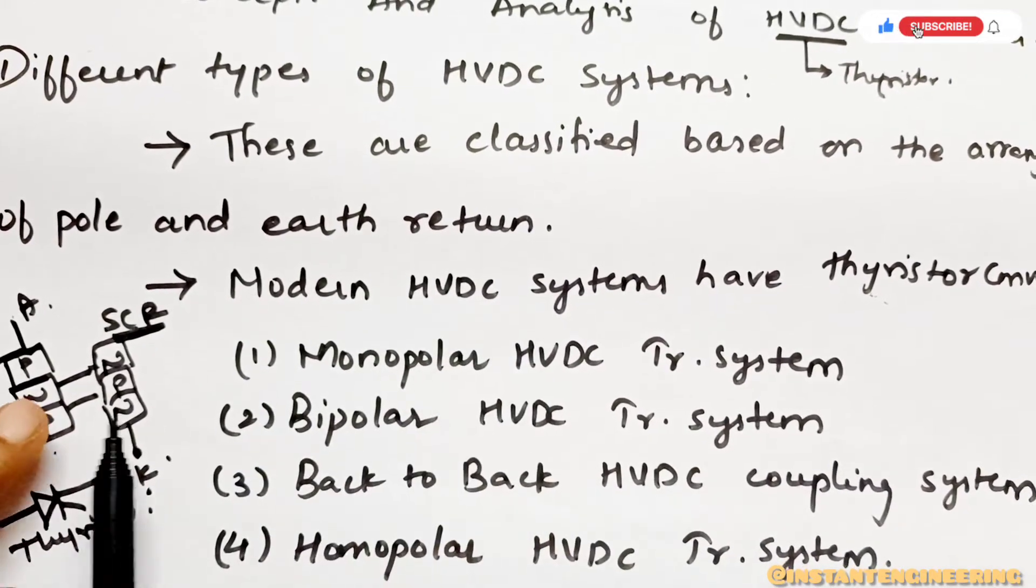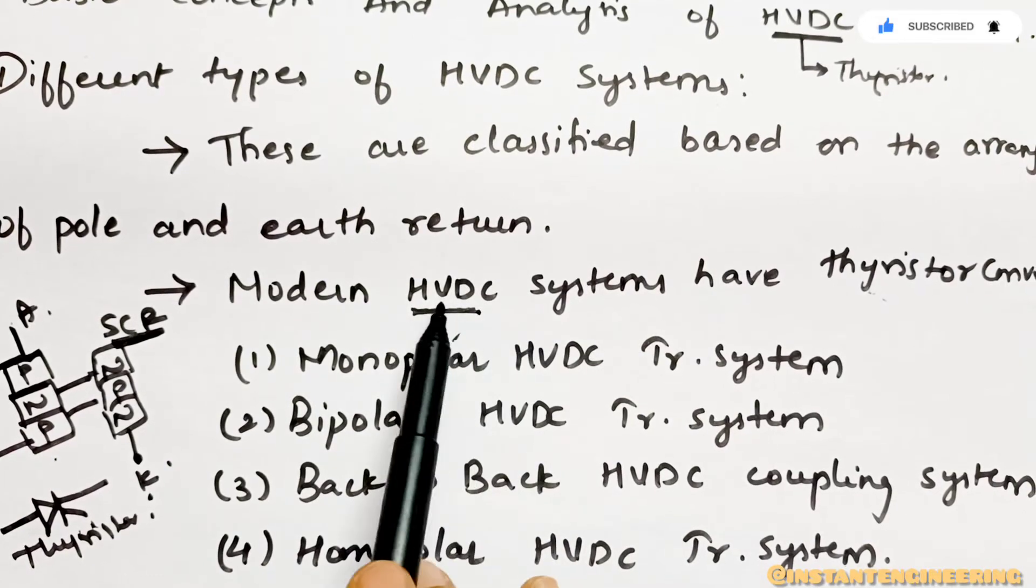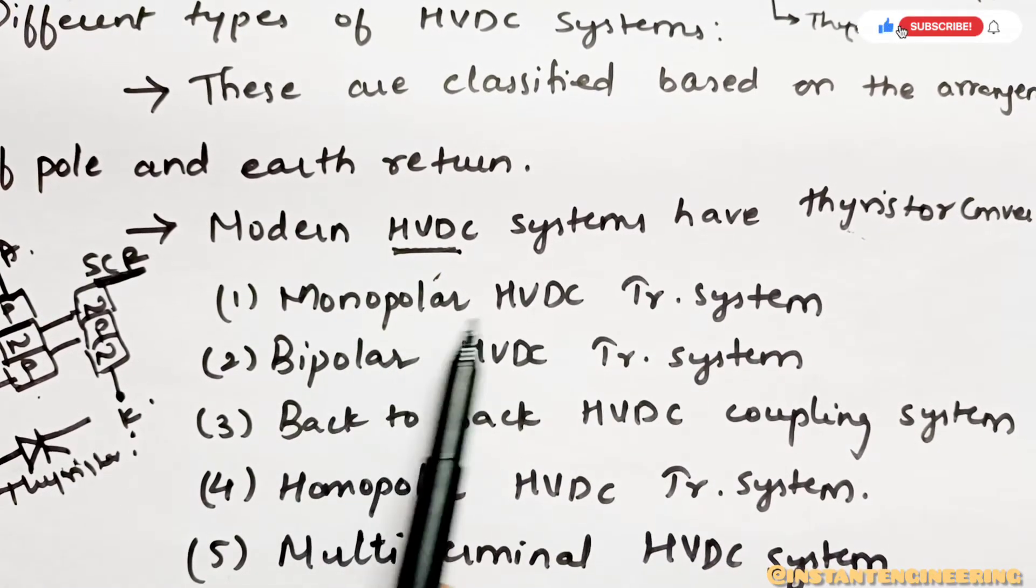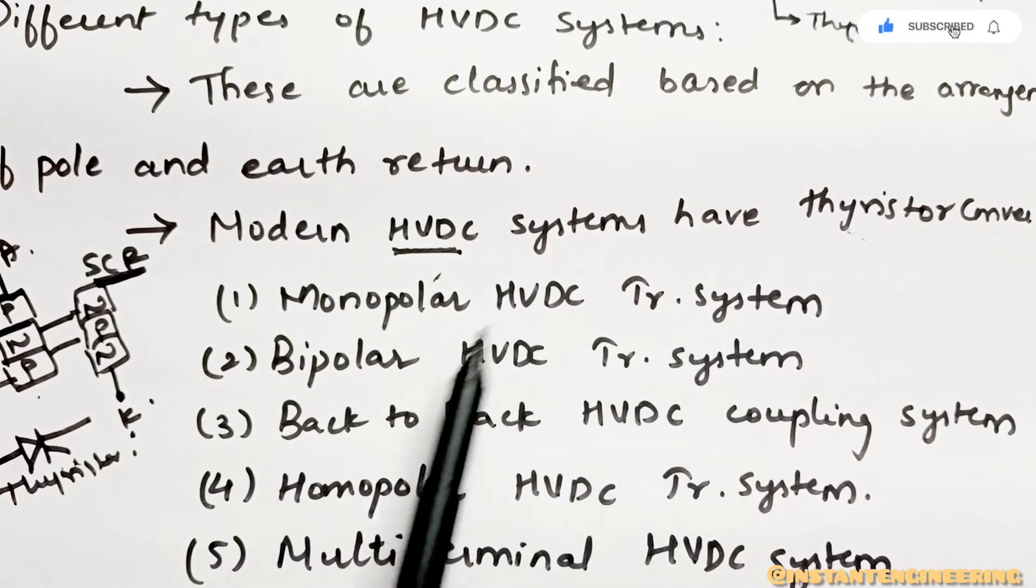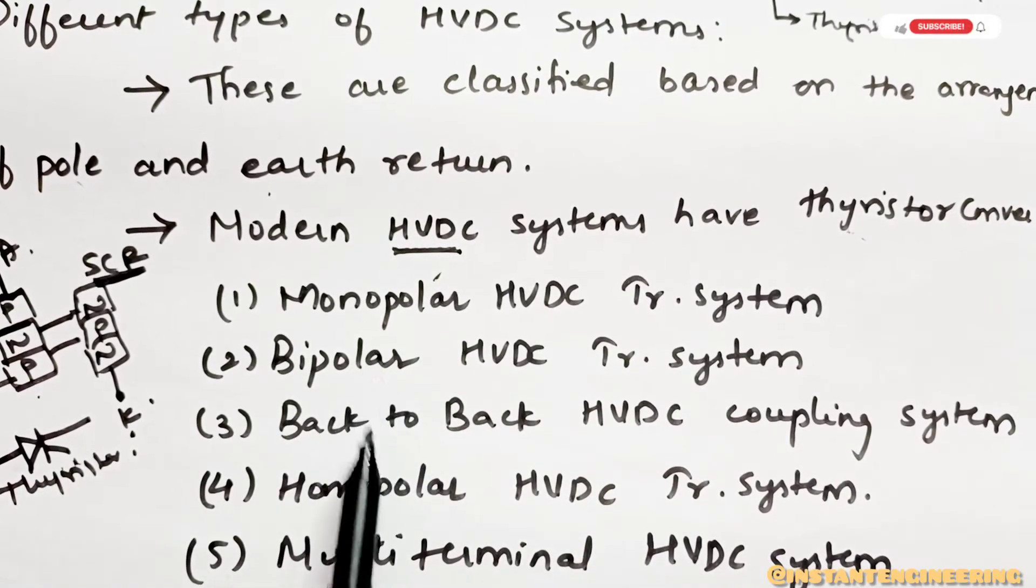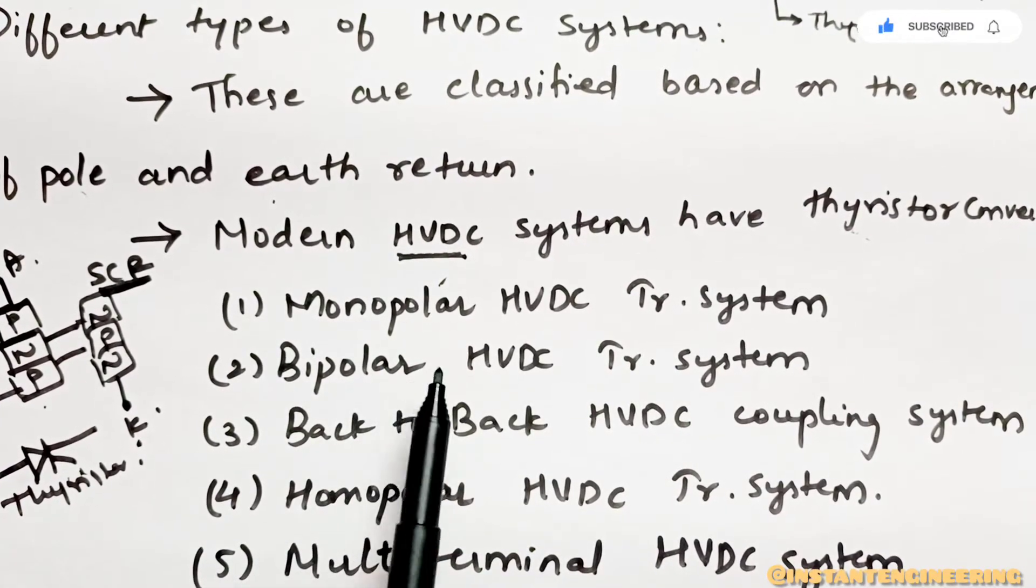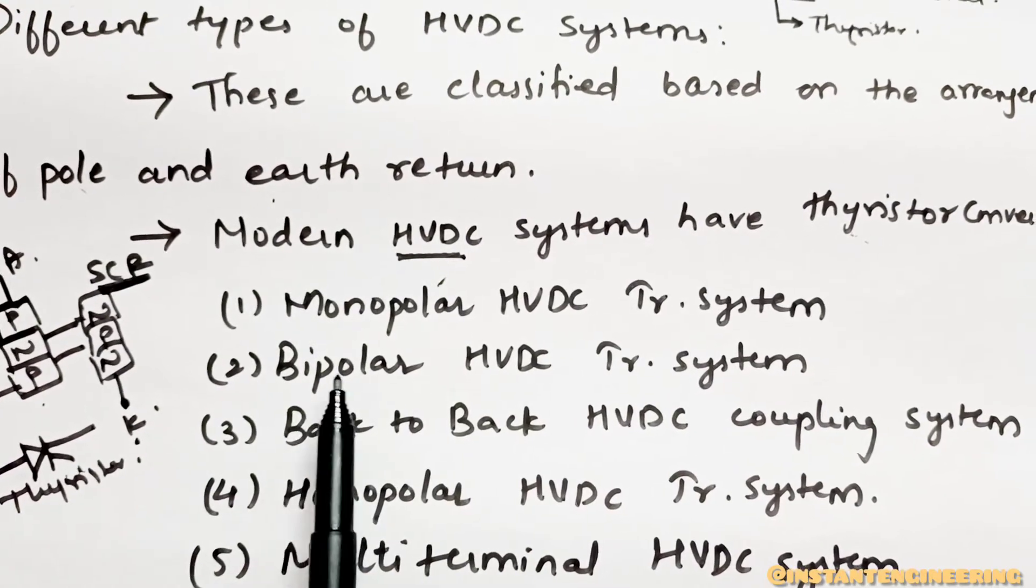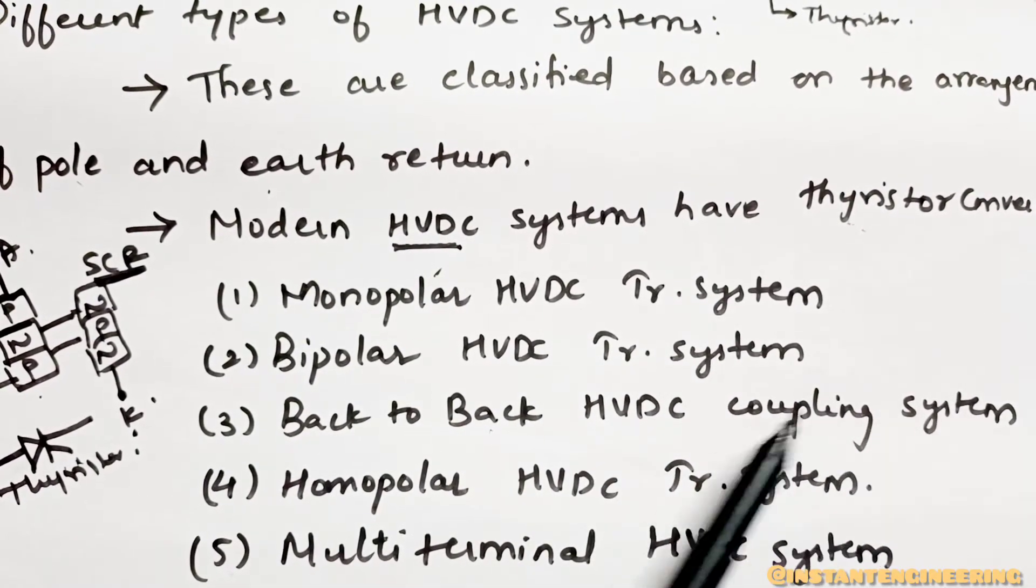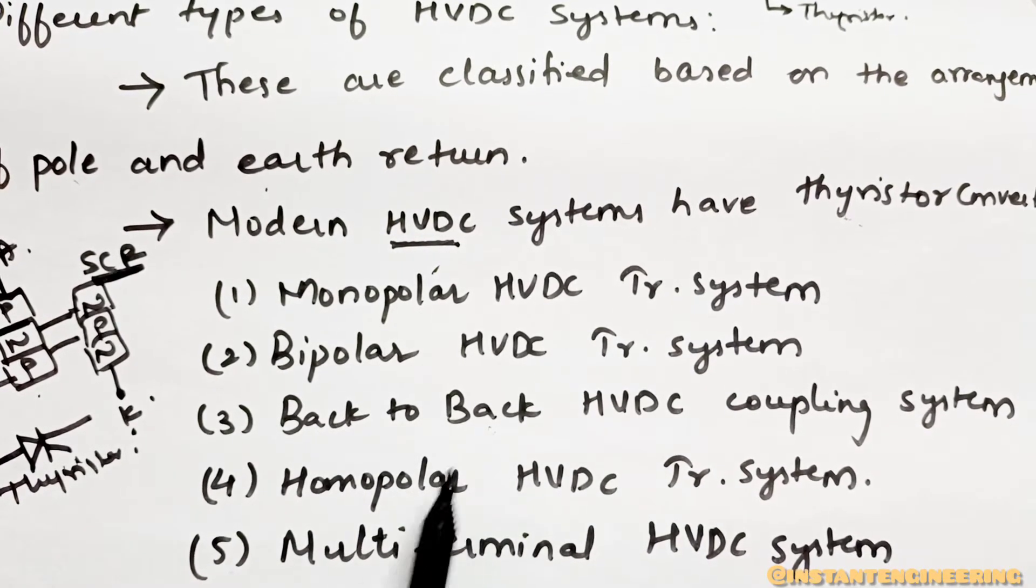Now we will see, these kind of thyristors we will be using in all HVDC systems. Based on that, these are divided into almost five types. First is monopolar HVDC transmission system. Monopolar - only one pole. We said it is between pole and earth, right? Second one is bipolar HVDC transmission system. Next, back-to-back HVDC coupling systems - two HVDC systems you can couple back-to-back.